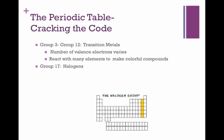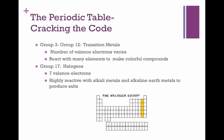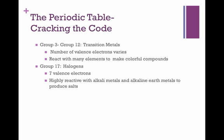Group 17 are the very familiar halogens. These elements have seven valence electrons. They are highly reactive with alkali metals and alkaline earth metals to produce salt.